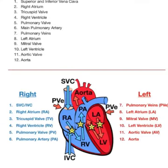Looking at how blood flows to the heart: you can see in the image there is the SVC on top of the heart and the IVC at the bottom. The SVC means superior vena cava and the IVC is the inferior vena cava. The superior vena cava receives blood from the upper body — the head, neck, and all that — while the inferior vena cava receives blood from the lower body, the legs.